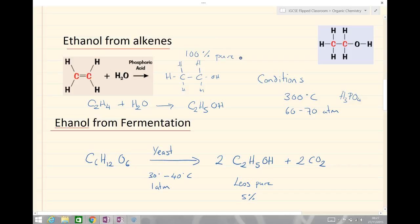So what that means is we have a comparison, we have a trade-off. Sugar is renewable. Ethene is non-renewable. The products for ethanol from fermentation are less pure, the products for ethene are 100% pure and we have different conditions.